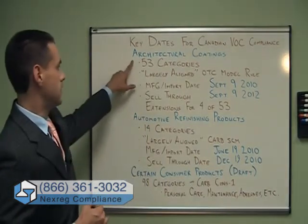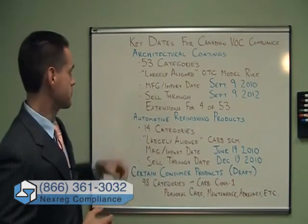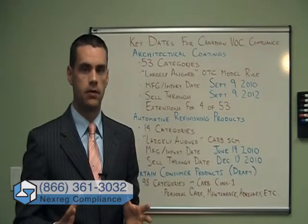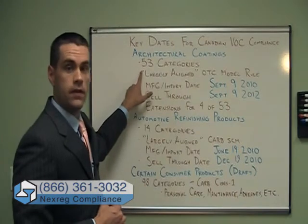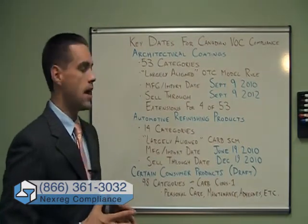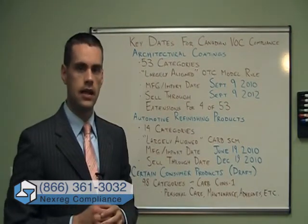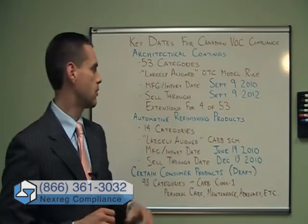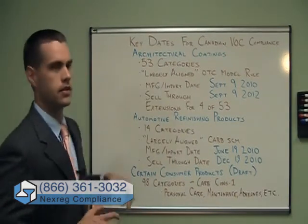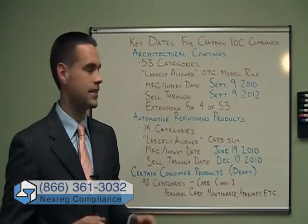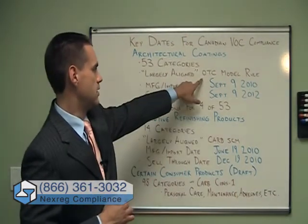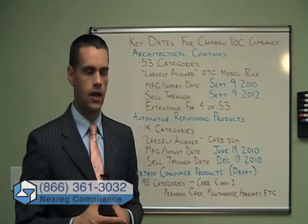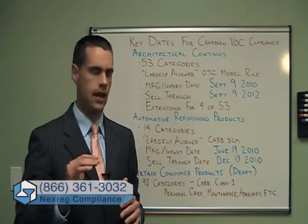The first is architectural coatings. Under the architectural coatings VOC limit regulations, there are 53 product categories and the limits in those 53 categories are what we would say are largely aligned or basically similar to the US's OTC model rule. They're quite similar in both definitions and the limits.